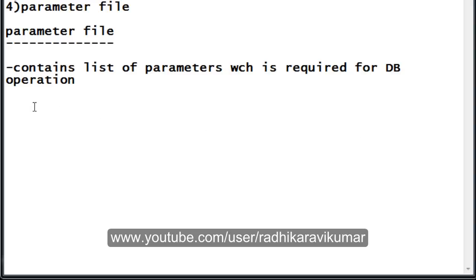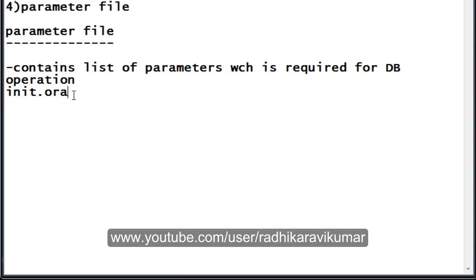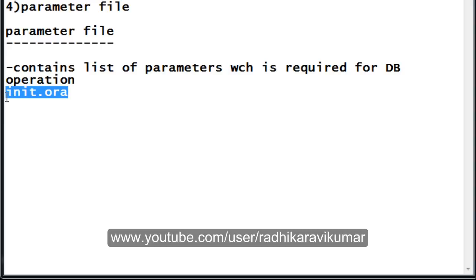You would have heard about init.ora — this is the parameter file. Whenever you go into the path where you have installed your Oracle, you can find this init.ora file. This init.ora file is mainly used whenever the database gets started up — it is the first file that is read when the database starts up.